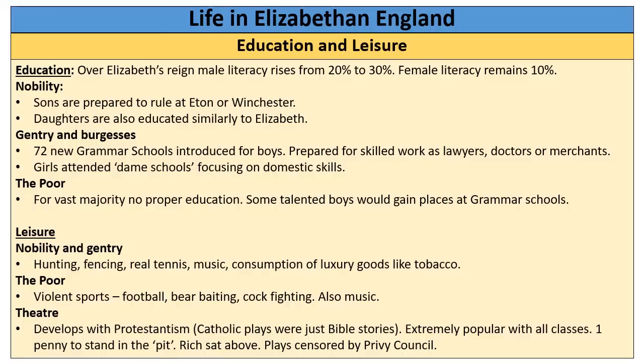In terms of leisure, it's split on class lines with one exception. The rich — the nobles and gentry — do hunting, fencing, real tennis, music and smoke tobacco. For the poor, the most popular things are violent sports like football, bear baiting and cock fighting. The one big development that unifies the classes is theatre. Before the Reformation, theatre wasn't really a big thing in England — the only plays were Catholic saints' plays or Bible stories. With Protestantism we get the plays of Ben Jonson, Shakespeare and Christopher Marlowe. It's extremely popular — you could pay one penny at the Globe to stand in the pit, and many poor people of London did this, while the rich came and sat above.